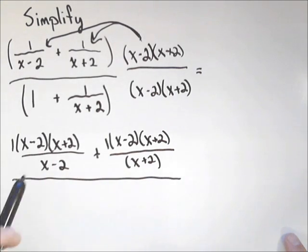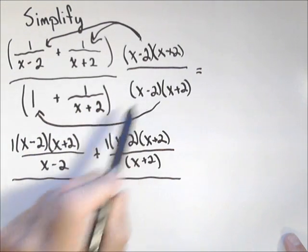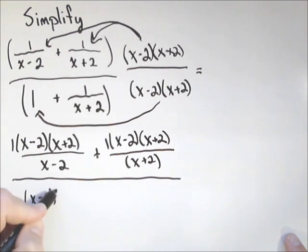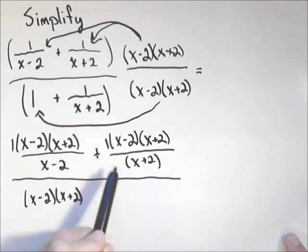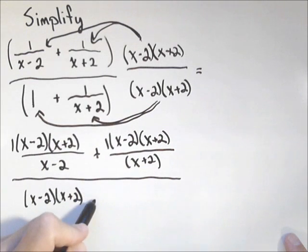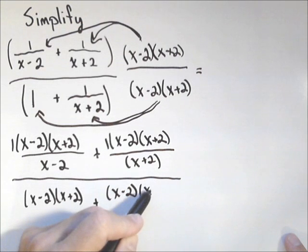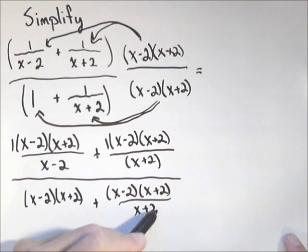All over, now we're gonna do the same in the denominator. This does have to get distributed. So x minus two times x plus two times one. There's no fraction here, but we'll still have an x minus two times x plus two. And then, being multiplied by this one, we'll end up with plus an x minus two x plus two over x plus two. A lot of writing.